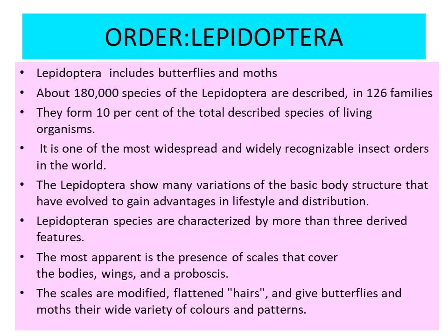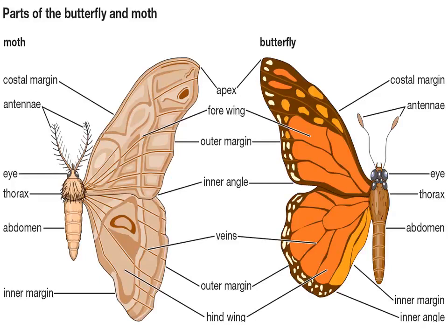Lepidoptera have scales on their bodies, wings, and proboscis. Now, what is the basic difference between a moth and a butterfly? Moths are nocturnal, while butterflies are diurnal. When we look at the antennae: in the case of butterfly, clubbed antennae are present, whereas in the case of moths, pointed antennae are present at the tip. The body of the moth is stouter and thicker, whereas the body of the butterfly is sleeker. When a butterfly sits on the substratum, it folds its wings vertically, whereas when a moth sits on the substratum, it opens or unfolds its wings.